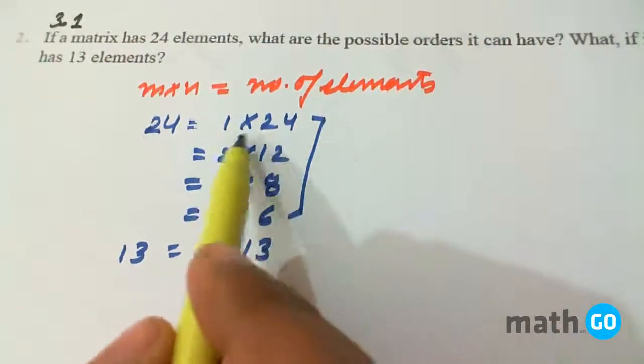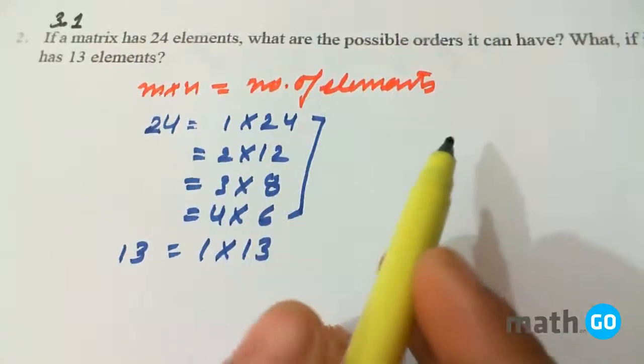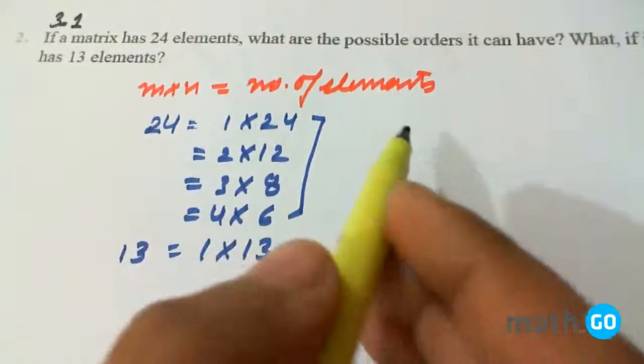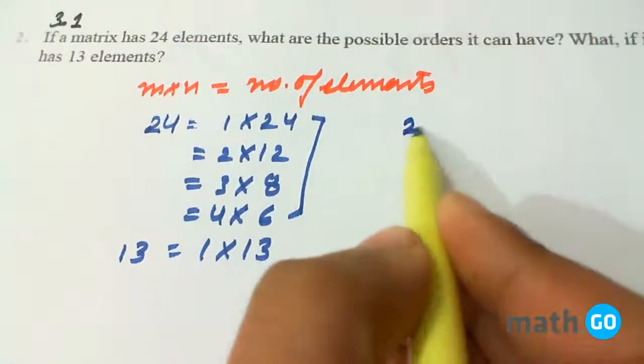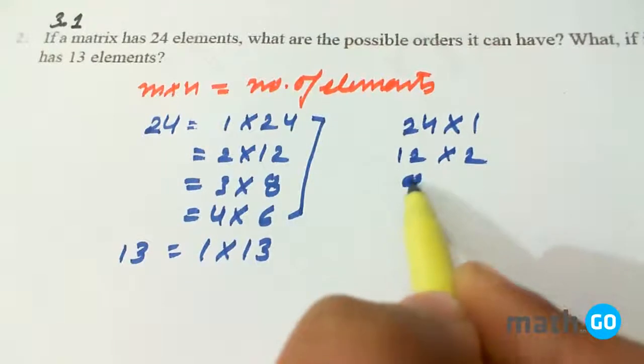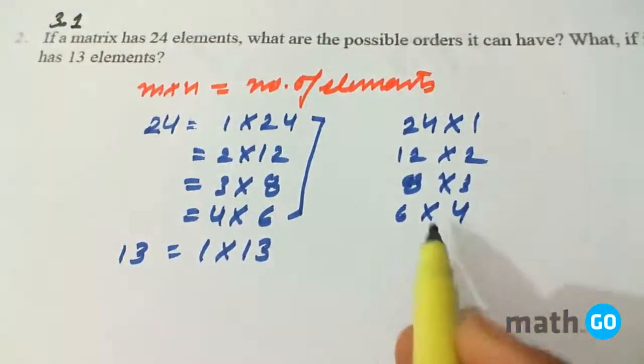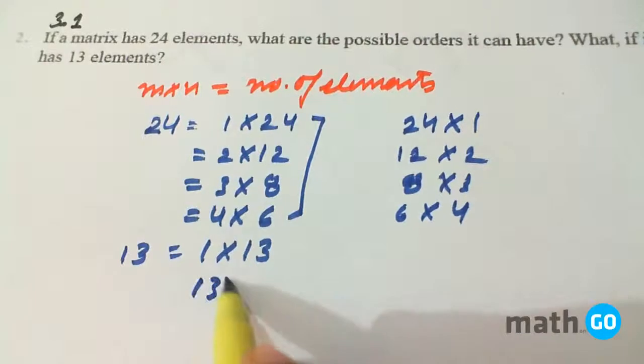Now, since 1 cross 24 is a matrix with 1 row and 24 columns, we can similarly have 24 cross 1 and similarly the others also 13 cross 1.